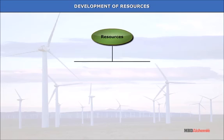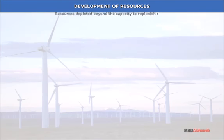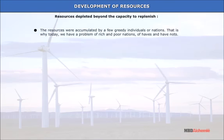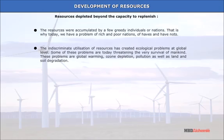Human beings use resources indiscriminately because they consider them to be mere gifts of nature. Resources were accumulated by a few greedy individuals or nations, which is why today we have the problem of rich and poor nations — the haves and have-nots. The indiscriminate utilization of resources has created ecological problems at the global level, threatening the very survival of mankind. These problems include global warming, ozone depletion, pollution, as well as land and soil degradation.